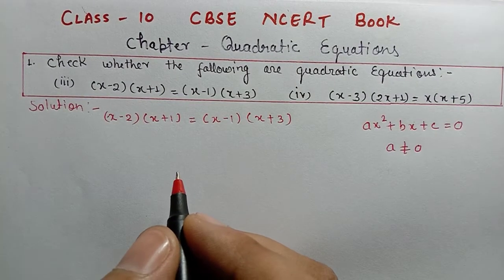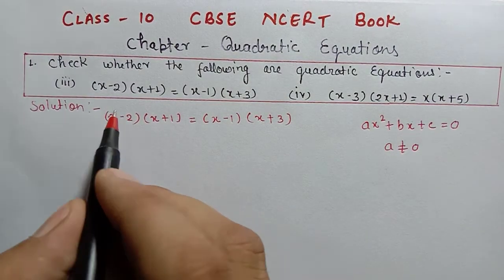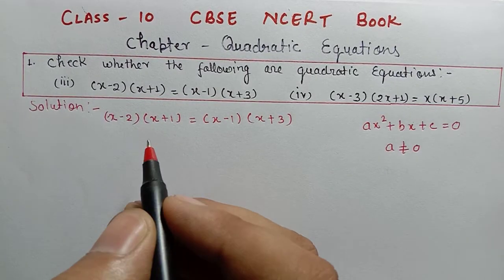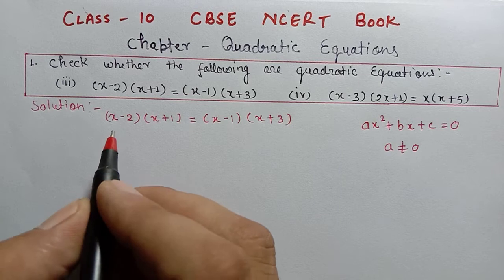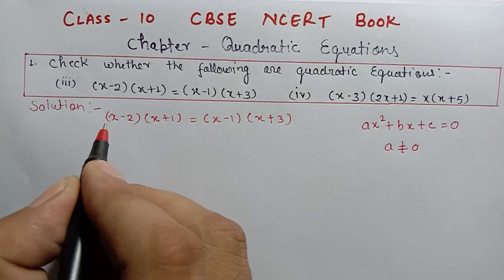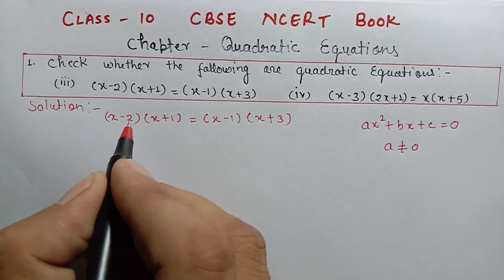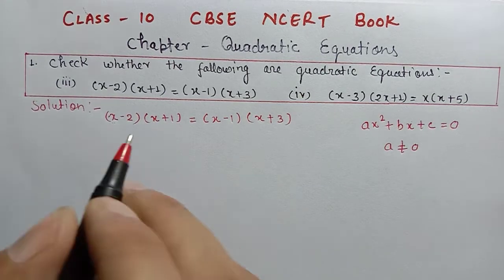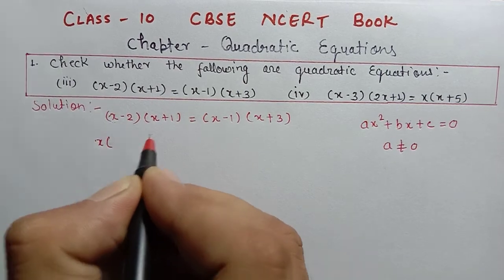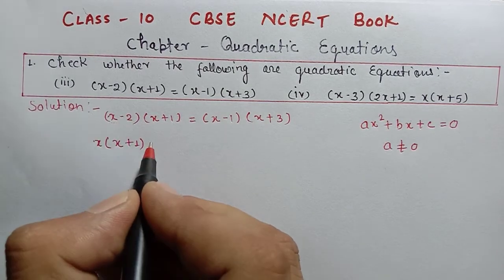So let us solve this first. To solve it, we need to multiply. I'll explain it in an easy way. What we will do is: multiply x by the complete second bracket, and then multiply minus 2 by the complete second bracket. So first, x will multiply (x + 1), then minus 2 will multiply (x + 1).